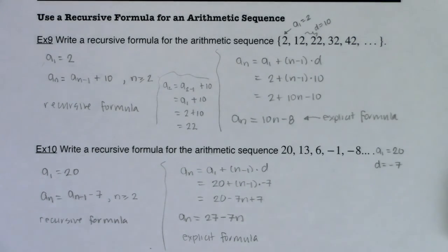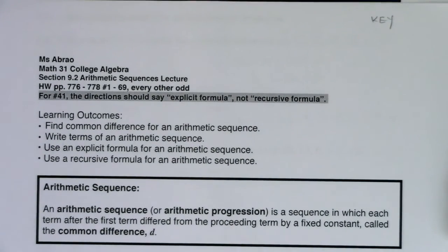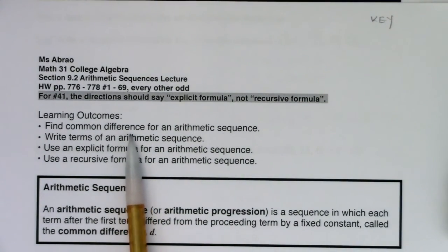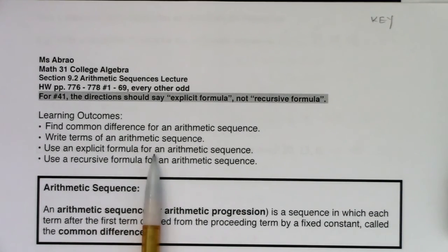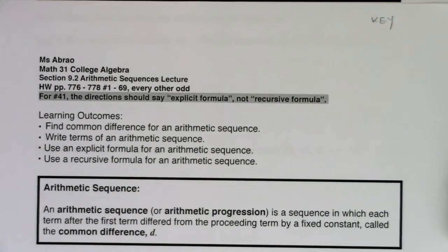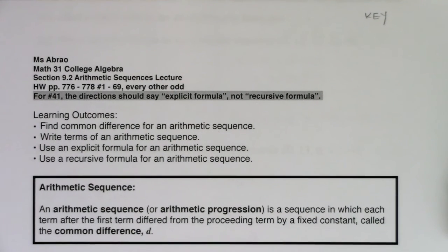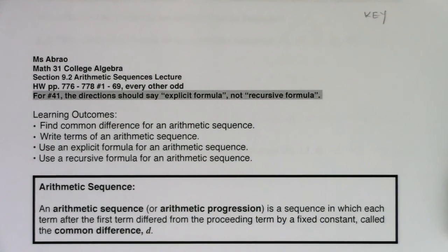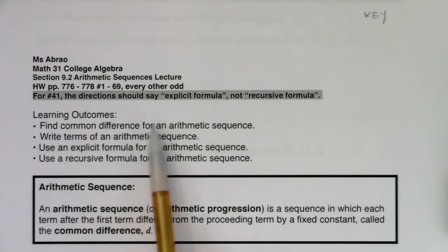Alright, so that's going to wind out or end out section 9.2. So I hope we're more comfortable with the common difference for an arithmetic sequence. That's just the letter d. We're comfortable writing out terms of an arithmetic sequence using explicit formulas for arithmetic sequence and using the recursive formula for an arithmetic sequence. We're going to move on into 9.3 where we're going to get our first look at the geometric sequences. And that means instead of adding or subtracting a number to get from one term to the next, we're going to multiply or divide by a number to get from one term to the next. Alright, I'll see you in a few. Bye.